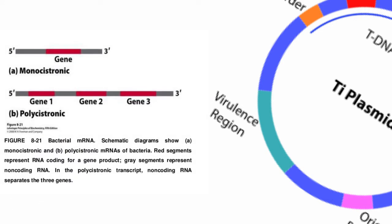The difference between monocistronic and polycistronic: monocistronic is an mRNA that encodes only one protein, while polycistronic is an mRNA that encodes several proteins. Polycistronic mRNAs are mostly found in bacteria, and monocistronic mRNAs are mostly found in eukaryotes.